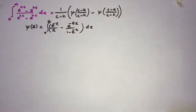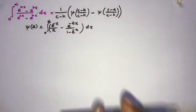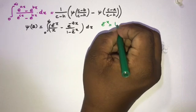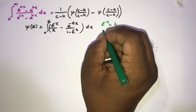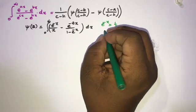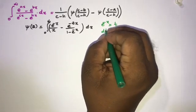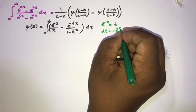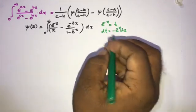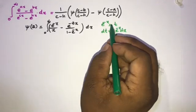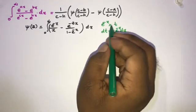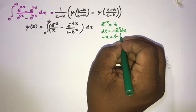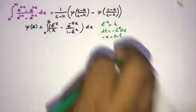Now I'm going to take a substitution. If we take e^(-x) = t, then differentiating gives dt = -e^(-x) dx. Taking the natural log of both sides, we get -x = ln(t).